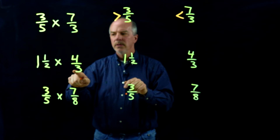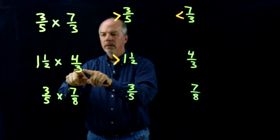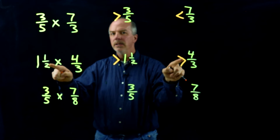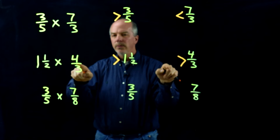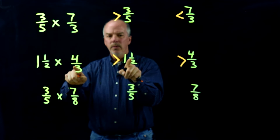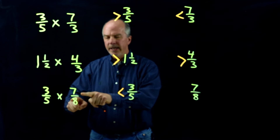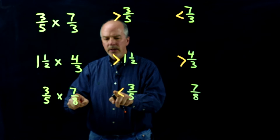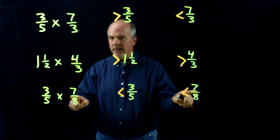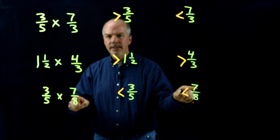Let's look at this one: 1 and 1 half times 4 thirds. I know the product will be greater than 1 and 1 half because 4 thirds is greater than 1. I also know the product will be greater than 4 thirds because 1 and 1 half is greater than 1. And for 3 fifths times 7 eighths: the product will be less than 3 fifths, and the product will also be less than 7 eighths, because 7 eighths times something less than 1 will be less than what we started with.